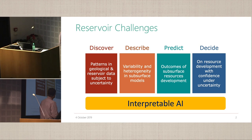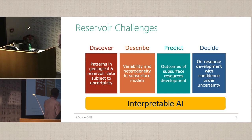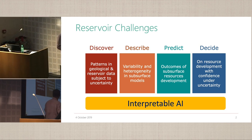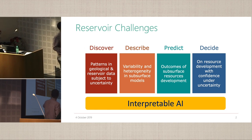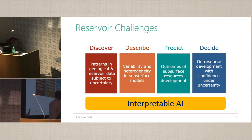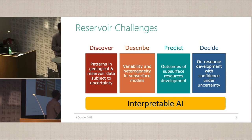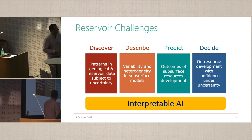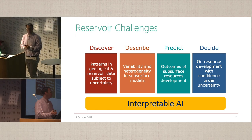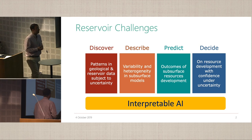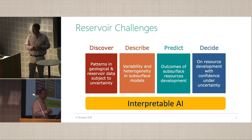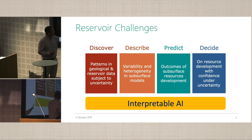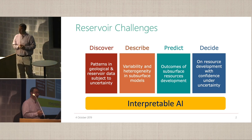On the landscape of reservoir challenges, I partition it into: discovering patterns in geological and reservoir data subject to uncertainty — that's my topic; describing variability and heterogeneity of the subsurface, where all the might of geological knowledge comes in; predicting outcomes of resource development, where we calibrate models to data; and finally making decisions under uncertainty. Interpretable AI should have a footprint across all four steps.